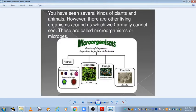You have seen several kinds of plants and animals. However, there are other living organisms around us which normally we cannot see. These are called micro-organisms or microbes. So, what are these microbes? These are the organisms that we cannot see with naked eyes. But, these microorganisms are very beneficial to us.